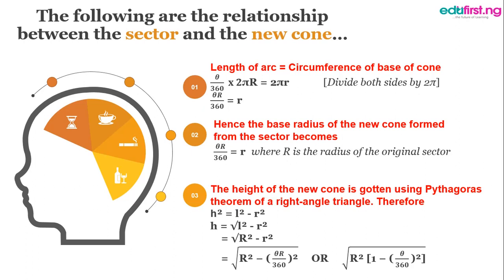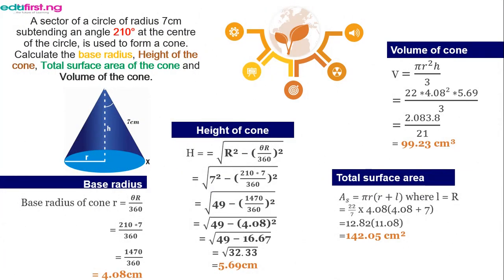If we expand that, we're given that, in the first instance, that r is equal to theta R over 360. So, when we substitute that into this equation, we're going to have the square root of R squared minus theta R over 360 all squared. So, that is the formula for the height of a cone. In the case that you're given an exercise, you can use this formula. Just simply apply it and substitute the values.